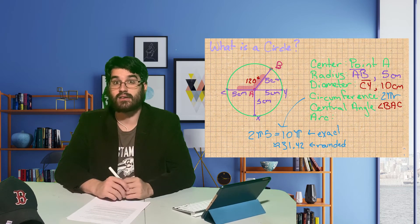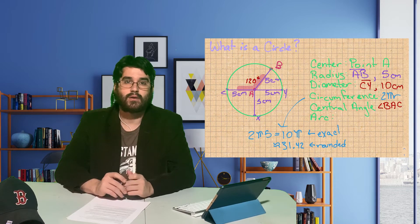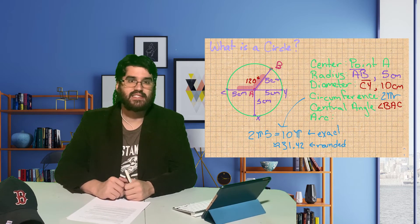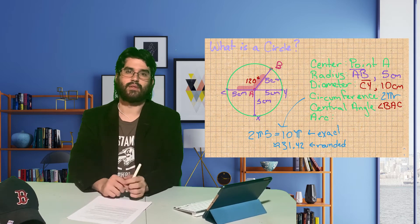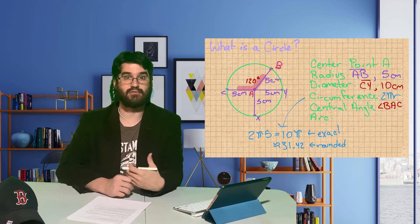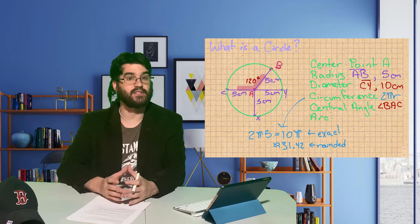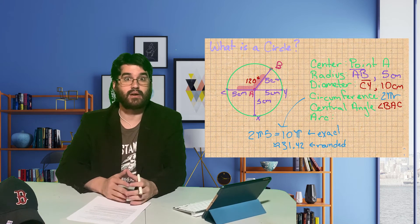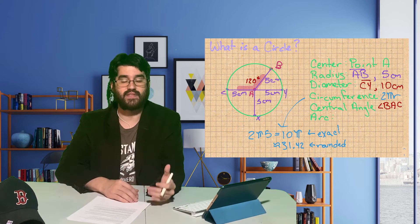Finally, we have arcs. Arcs are portions of the edge of a circle. There are three kinds of arc. There's a minor arc, which is less than half of a circle. There's a semicircle, which is exactly half. And then there is a major arc. A major arc is more than half of the circle.